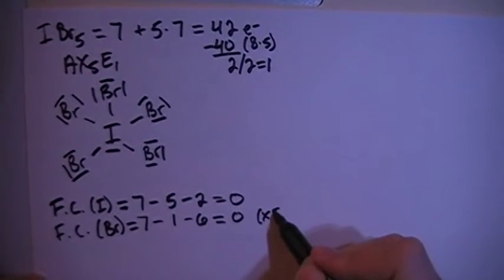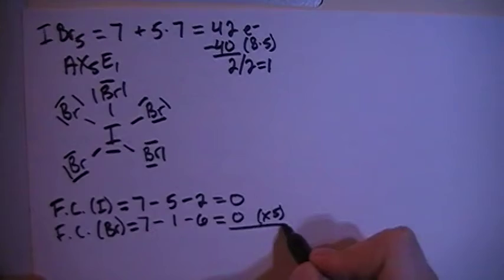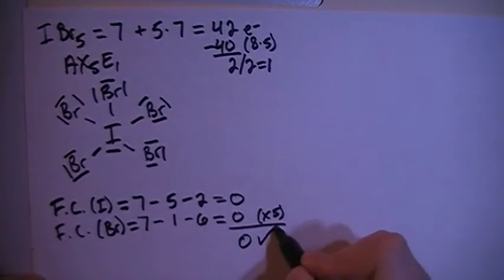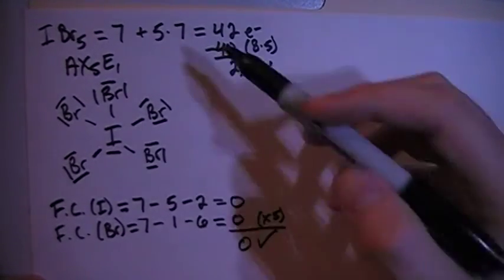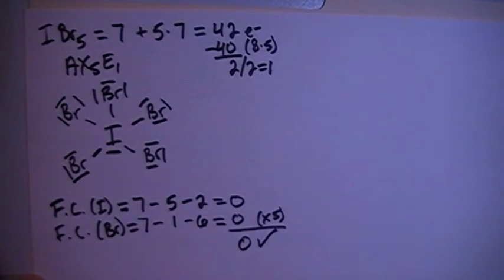Multiply that by 5 because there are 1, 2, 3, 4, 5 of them. Add this up, overall formal charge of 0, which is what we need because this is not a charged particle or compound.